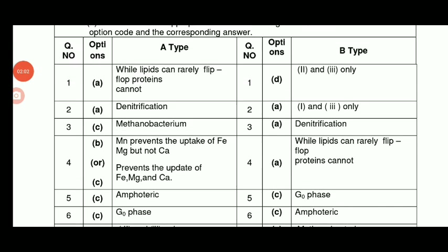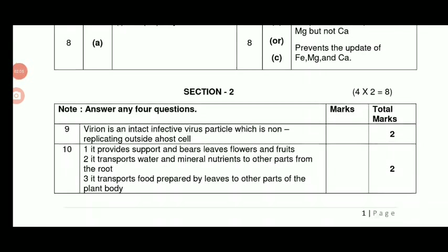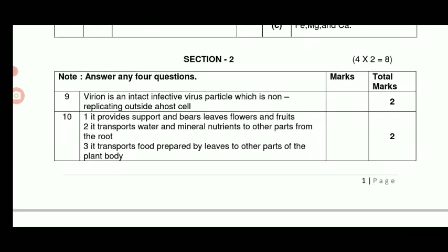1 mark section complete. Section 2: 2-mark questions. For the definition, you will get two-mark questions. Virion is an infective virus particle which cannot replicate outside the host cell. This is the definition for 2 marks.